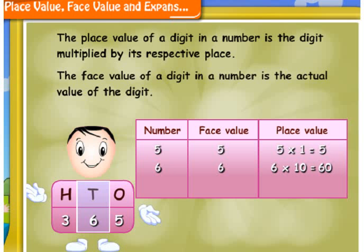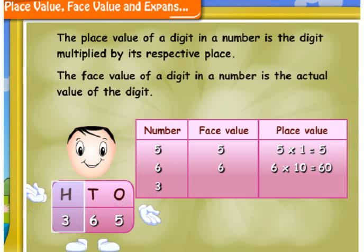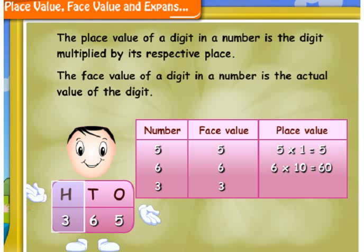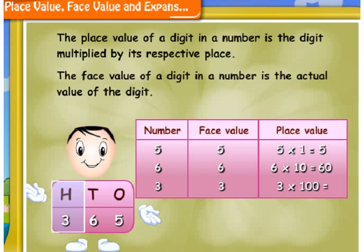The digit at hundreds place is 3. Its face value is 3 itself. The place value of this digit is 3 multiplied by 100, which is 300.